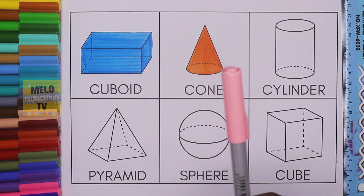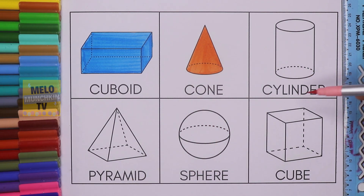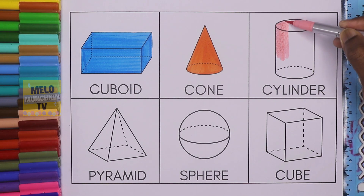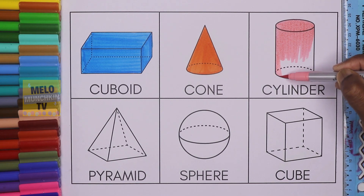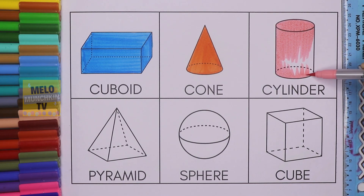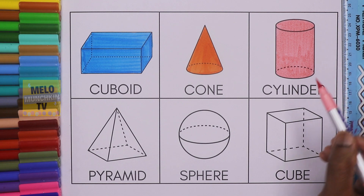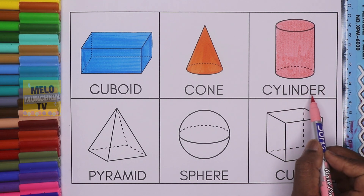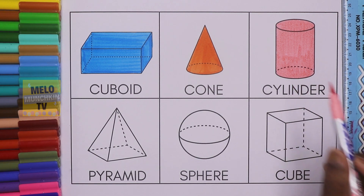Next we'll color the cylinder with this color — this is light pink color — and this one is cylinder. C-Y-L-I-N-D-E-R, cylinder. This shape is called cylinder and this is light pink color.